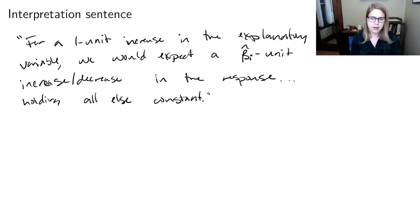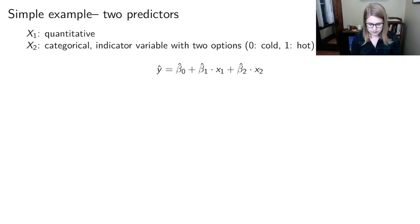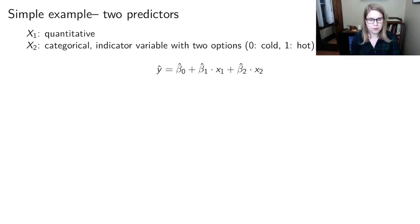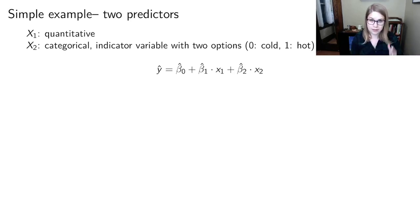We're going to be thinking about much more complex situations as we move on in this course. I want to start with the most simple possible example where, instead of just one predictor, we've got two predictors. x1 is a quantitative variable, just like we've been doing in simple linear regression, and x2 is going to be a categorical binary indicator variable with just two options, 0 and 1. My favorite binary example is whether you like your coffee cold or hot — that's a pretty binary decision.